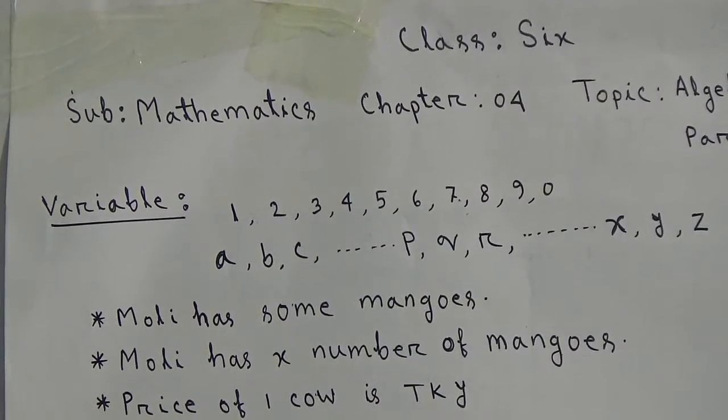Now students, we will solve the CQ. At first, I am reading the stem of the CQ. If the price of a pen is tk x and the price of a book is tk y, (A) find out the price of 5 pens. Now solution. Here, given the price of a pen - a pen means 1 pen - the price of 1 pen is tk x. So the price of 5 pens will be 5 times of x, that means x multiplication 5. So it will be tk 5x and the answer will be tk 5x.